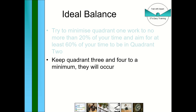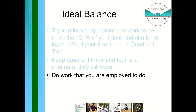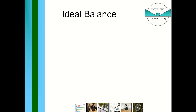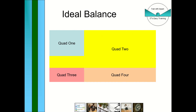Keep quadrants three and four to a minimum, but they will occur. Do the work you're employed to do, not just what you want to do. Don't do other people's work at the expense of your own — even if they bully you into it, which does tend to happen. The yellow area on the graph shows where you need to be the most — flicking between quadrants one and two, with minimal time in three and four.